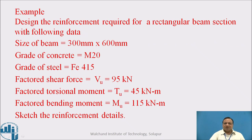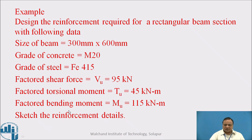This is an example. Design the reinforcement detail required for a rectangular beam section with the following data: size is 300 by 600 mm, grade of concrete is M20, grade of steel is Fe415, factored shear force is 95 kN, factored torsional moment is 45 kNm, and factored bending moment MU is 115 kNm. Sketch the reinforcement details.